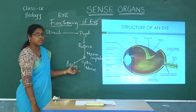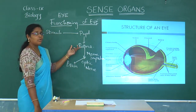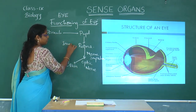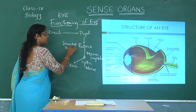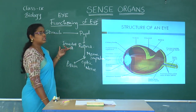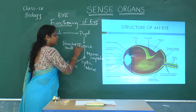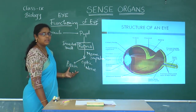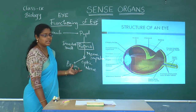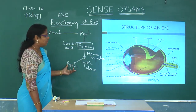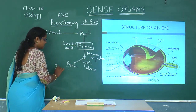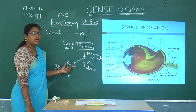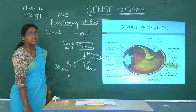The brain analyzes the information. The image formed on the retina is an inverted and smaller image. This inverted image is carried by the optic nerve to the brain, where the brain analyzes that information and forms a three-dimensional image.